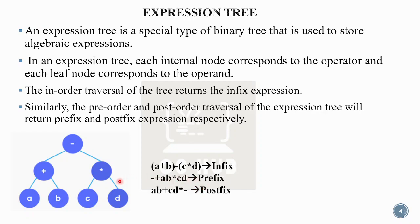For post-order traversal, the root comes last. Go left, then further left — A. Then right — B. Then that node: plus. So A B plus. Then go right subtree: left C, right D, node star — C D star. Then the root: minus. Full postfix expression: A B plus C D star minus.